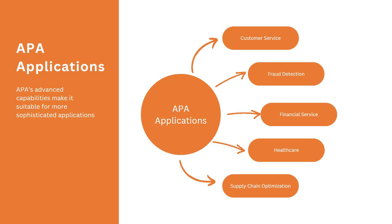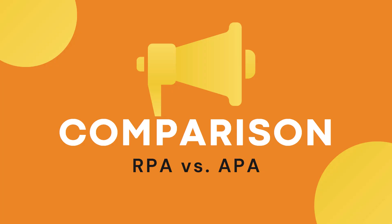Coming to the applications of APA — they are kind of similar to RPA, with a few additional areas like fraud detection and supply chain optimization. Wherever you use RPA, to improve your process and introduce decision making and adaptability, you can go ahead and use APA in those particular industries or applications.